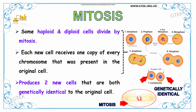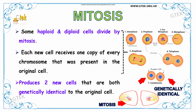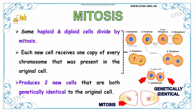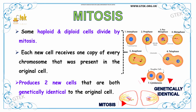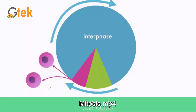Now we are going to see about mitosis. Some haploid and diploid cells divide by mitosis. Each new cell receives one copy of every chromosome that was present in the original cell. You can see mitosis here. It produces two new cells that are both genetically identical to the original cell. You can see the daughter cells over here.